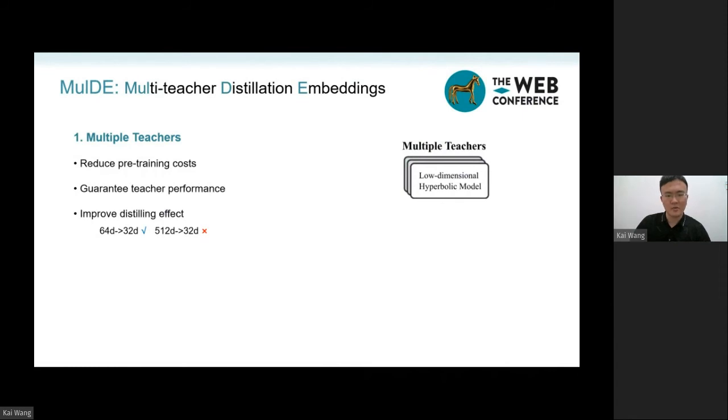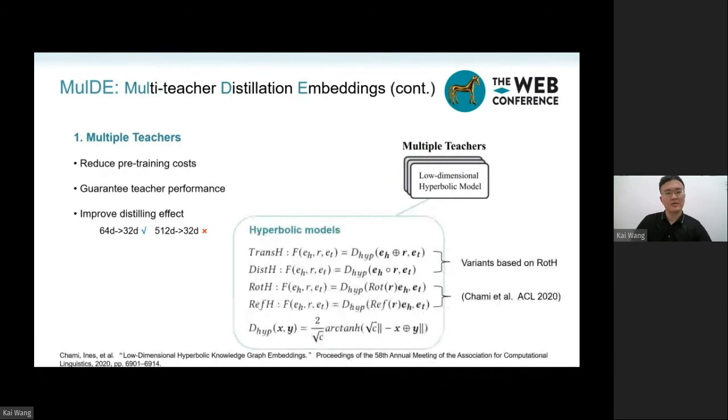Besides, a student model is easier to acquire knowledge from a teacher with a similar size, compared with the one having hundreds of dimensions. Specifically, we select these four hyperbolic models as teachers. Their scoring functions are shown in this slide.